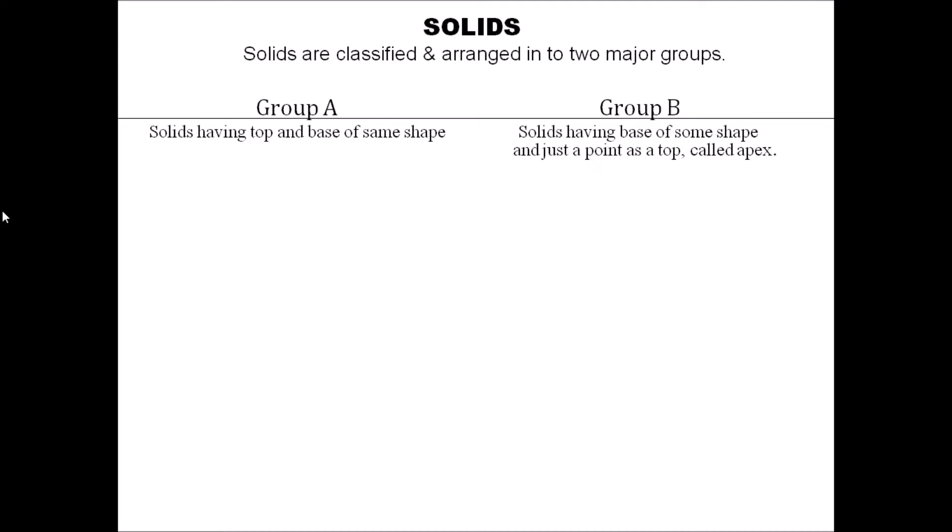In Group B, we have kept those solids whose base shapes are different coming up, and at the top they will always have an apex.